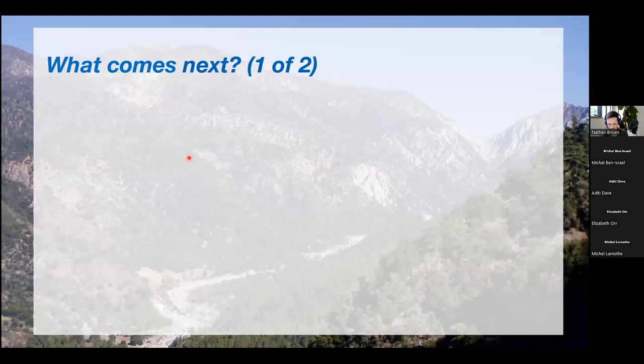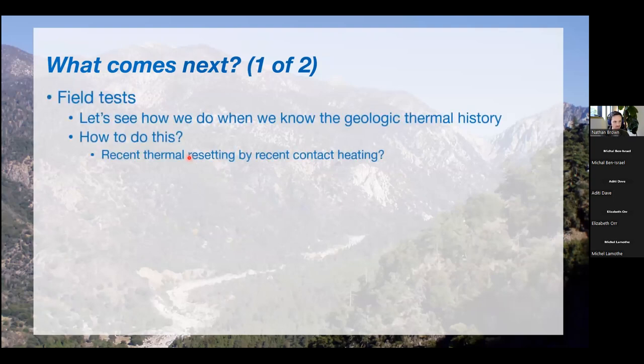So we've got all of these exciting results. What comes next? How do we develop this from here? I think with it being a relatively young technique, it will be nice to develop some field tests. Collecting samples where we have known geologic thermal history. So we've done boreholes, we've done rapidly exhuming samples. One thing I'd like to try in the future is recent contact heating samples. How do we do in phases like that?